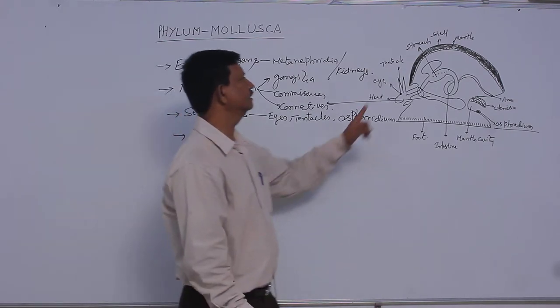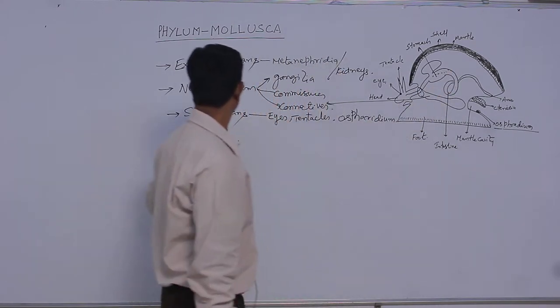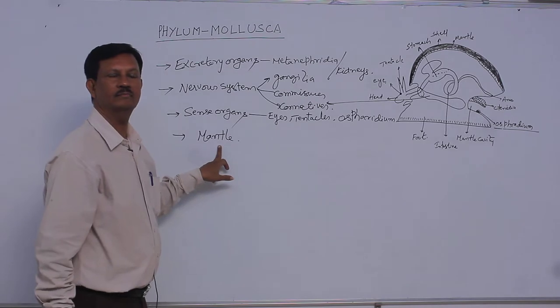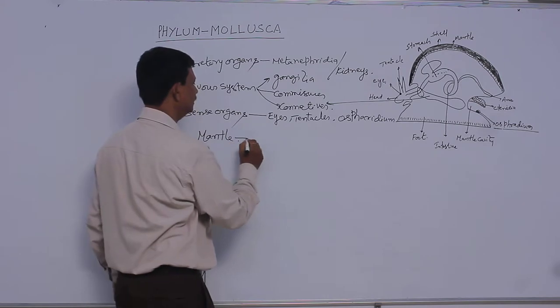And mantle, the skin, the soft body or external side of the skin secretes mantle or paleo. It covers all the visceral organs, it secretes the shell.